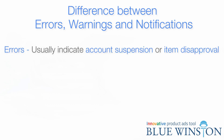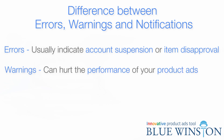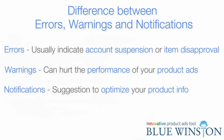Errors mean only one thing: something is bad. They usually indicate account suspension or product disapproval — products won't appear in Google Shopping searches due to some mistakes. Warnings are not as serious as account suspensions or disapproval; however, they could lead to that in the future, and they can hurt the performance of your product listing ads. Notifications are suggestions to optimize your product information — they won't affect your products from showing, but Google lets you know that the product data can be improved.